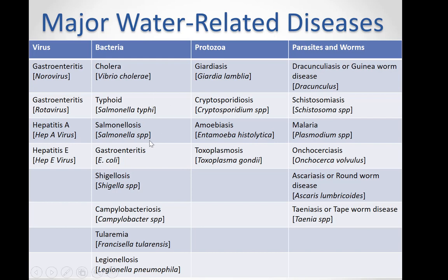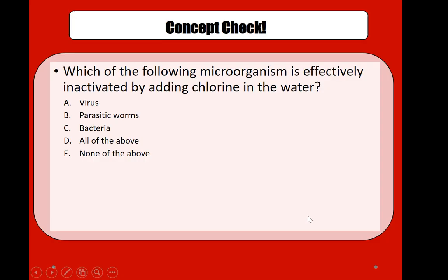Protozoa-caused diseases listed include giardiasis, cryptosporidiasis, amoebiasis, and toxoplasmosis. From parasitic worms, examples include dracunculiasis — also known as guinea worm disease — schistosomiasis, malaria, onchocerciasis, ascariasis or roundworm disease, and taeniasis or tapeworm disease.